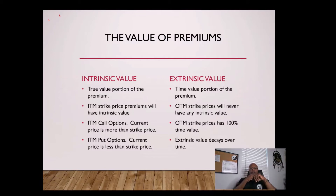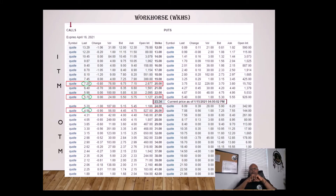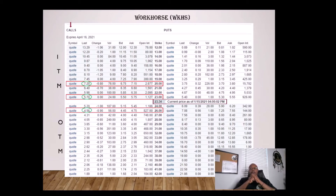Let's take a look at an example — a call option. The stock is Workhorse, and we're going to concentrate on the call portion of this options trade. As of January 15th, when I did a snapshot of this, the price of Workhorse is at $23.34. To be in the money, the strike price must be less than the current price, and to be out of the money, the strike price must be more than the current price. Let's look at three examples: strike prices of $20, $23, and $26, with the current price being $23.34.